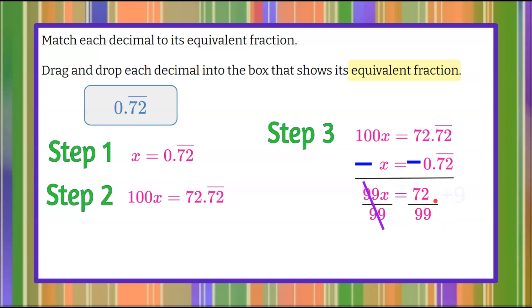72 and 99 are both divisible by 9. 72 divided by 9 is 8. 99 divided by 9 is 11. So 0.72 repeating is equivalent to 8 elevenths.